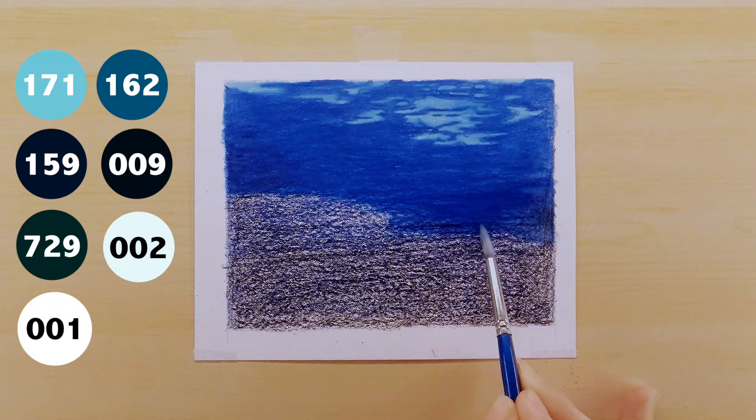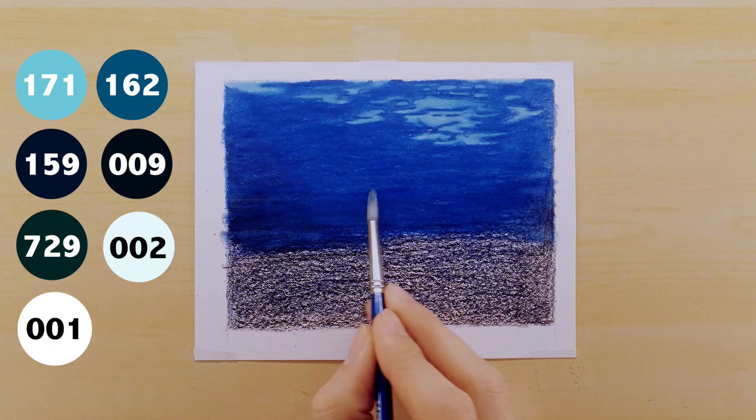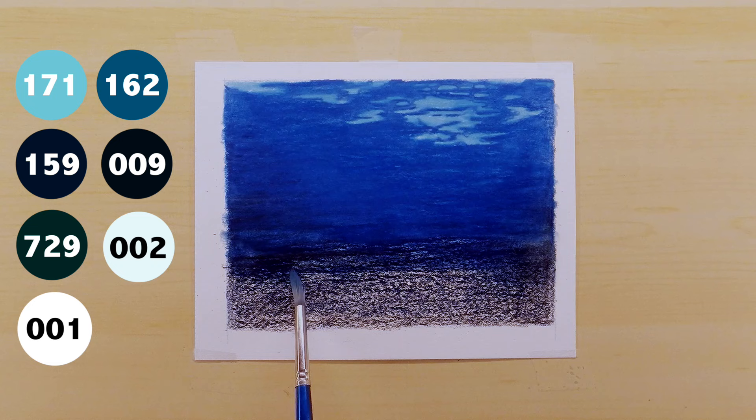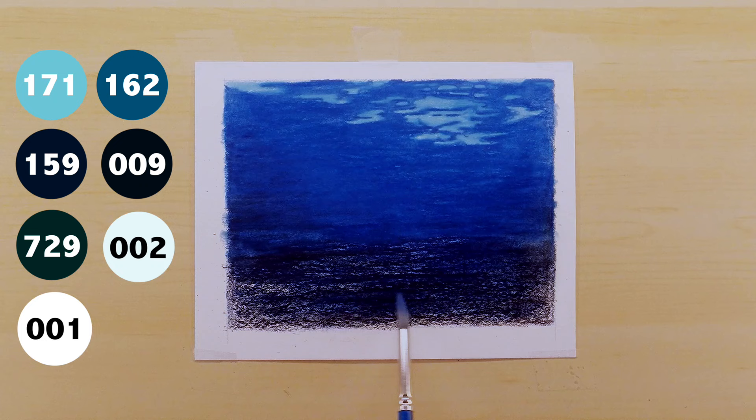You can kind of play around with how much you blend at this point because you'll notice at the bottom where it stays a bit more grainy before I blend it out a second time, it actually creates a really nice kind of reef ground effect that if you liked you can actually keep, but I go ahead and blend the brush a bit out.